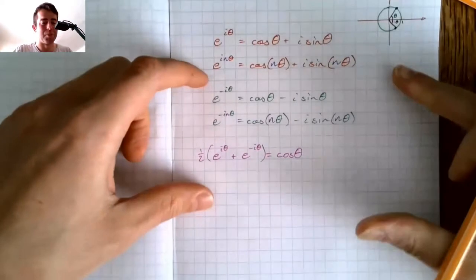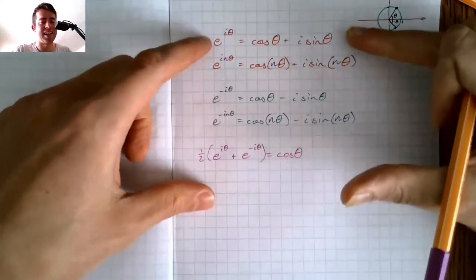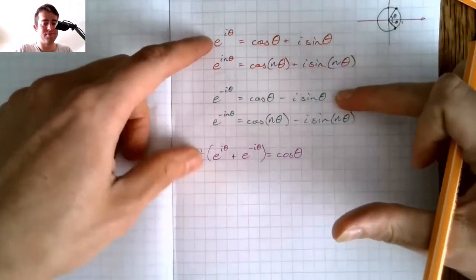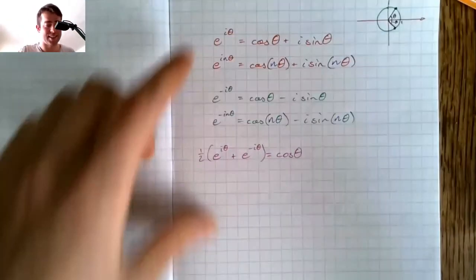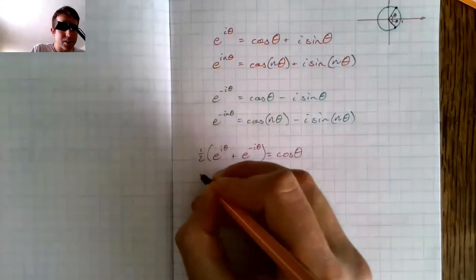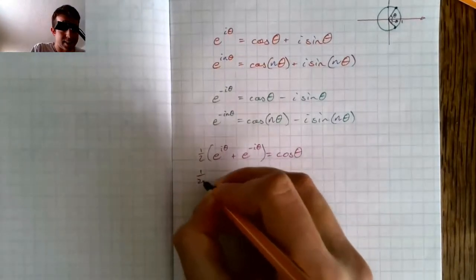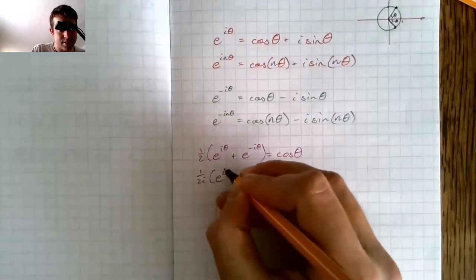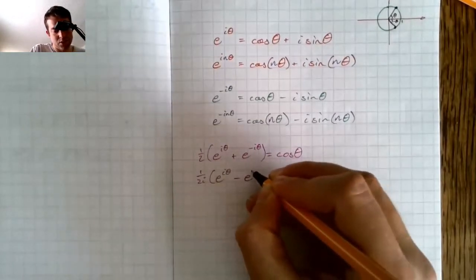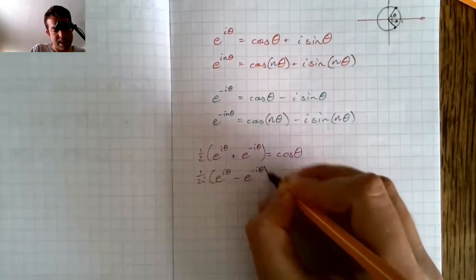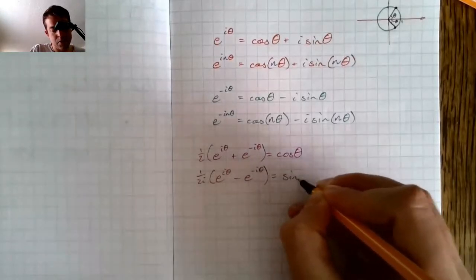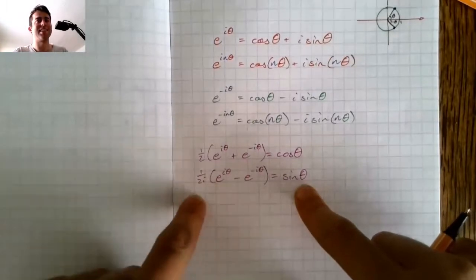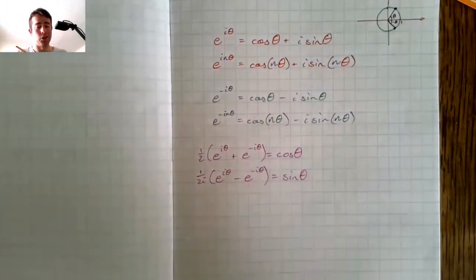We can get sine as well by doing a very similar thing. If I take that first one and minus this one, then the cos's are going to cancel out. We end up with a pesky little i that we need to divide by as well because the i in front of the sine. But the expression is also very neat. We have sine theta in terms of e's and i. How lovely is that?